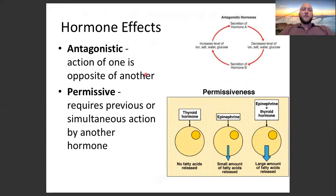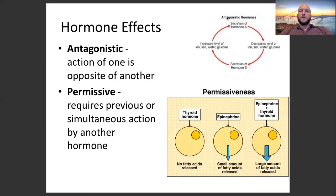Some hormones have an antagonistic effect, meaning the action of one opposes another. Insulin and glucagon are a classic example: insulin lowers blood sugar levels while glucagon increases them. Secretion of one hormone decreases levels of a substance while the other increases them — they work in both directions. We also saw this earlier in the semester with calcitonin and parathyroid hormone.